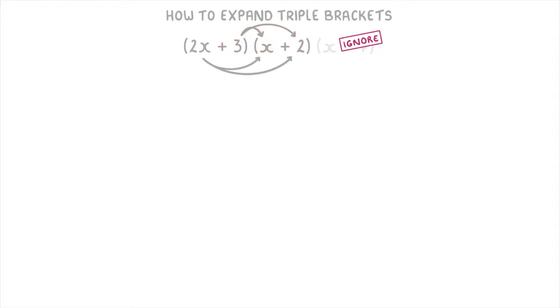This gives us 2x squared plus 4x plus 3x plus 6, which simplifies to 2x squared plus 7x plus 6. Next we can put this simplified answer in brackets and multiply the whole thing by the x plus 4 that we were ignoring.